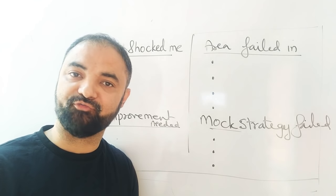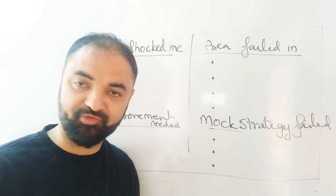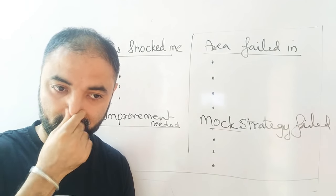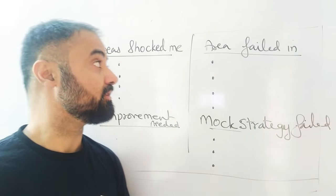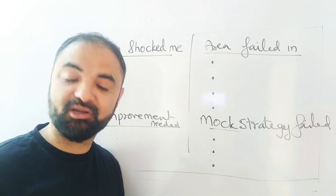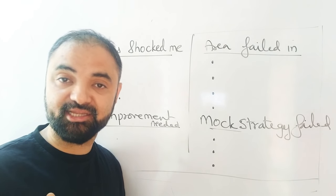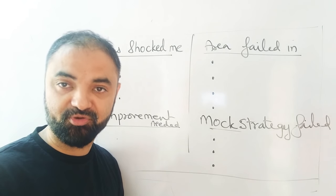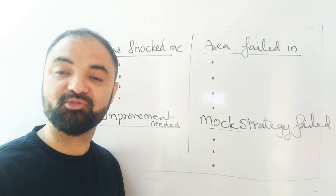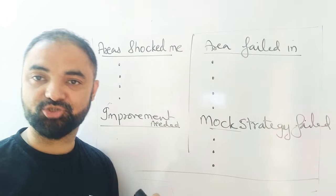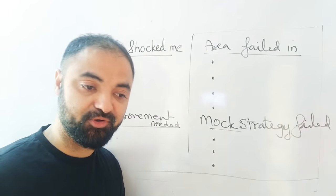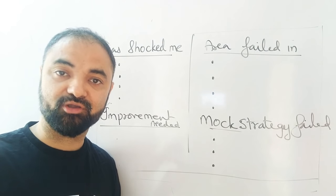After every mock we normally talk about what went wrong and what went right. This is a typical table which I want you to draw after every mock — more from a strategy point of view. Number one, you should be writing out the area which shocked you. For example, you were very good at coding and input-output, but you fumbled in the exam in that area — puzzles, which was your favorite area. These are the topics which will help you understand this is your strong area.